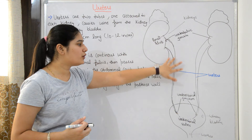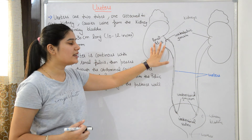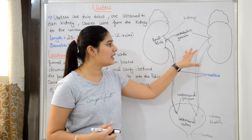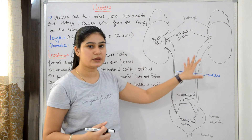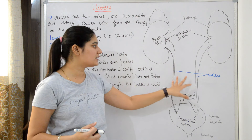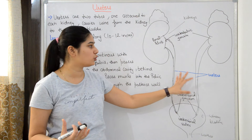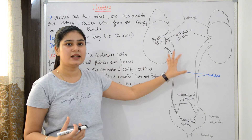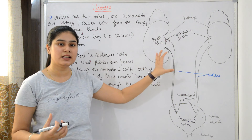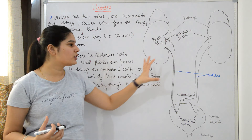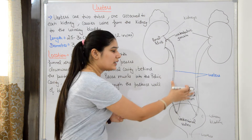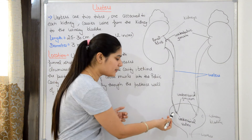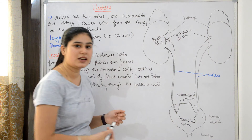The ureter receives urine from the kidney. Ureters are bilaterally arranged — they receive the urine from the kidneys and carry it to the urinary bladder.